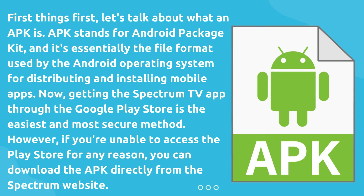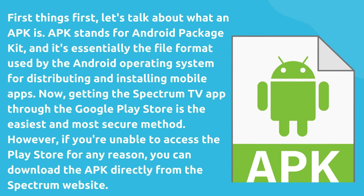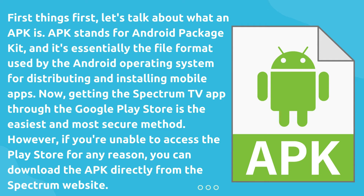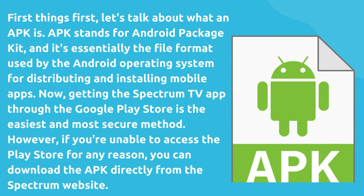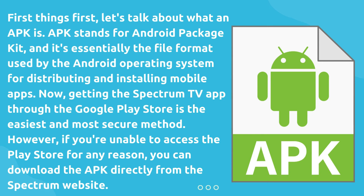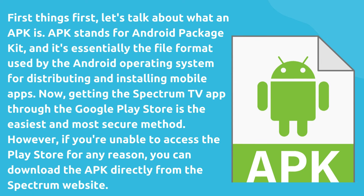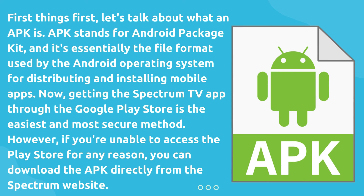First things first, let's talk about what an APK is. APK stands for Android Package Kit, and it's essentially the file format used by the Android operating system for distributing and installing mobile apps. Now, getting the Spectrum TV app through the Google Play Store is the easiest and most secure method. However, if you're unable to access the Play Store for any reason, you can download the APK directly from the Spectrum website.